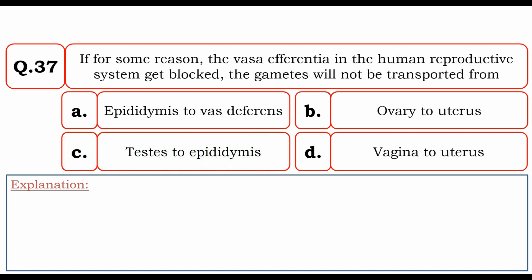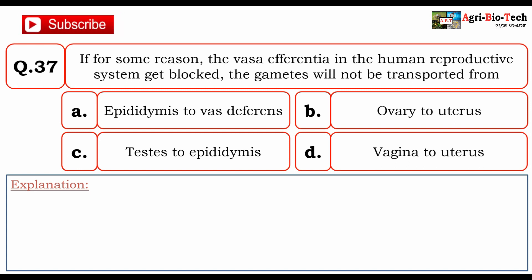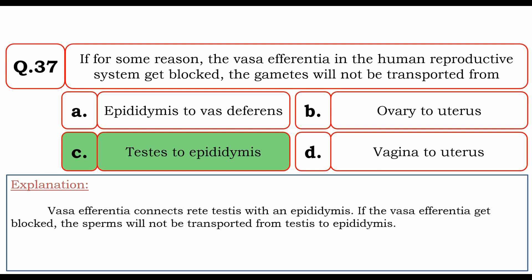Next question: if the vasa efferentia in the human reproductive system get blocked, the gametes will not be transported from — A) epididymis to vas deferens, B) ovary to uterus, C) testes to epididymis, or D) vagina to uterus. The correct answer is C) testes to epididymis. Vasa efferentia connects the rete testes with the epididymis. If the vasa efferentia get blocked, sperm will not be transported from testes to epididymis.